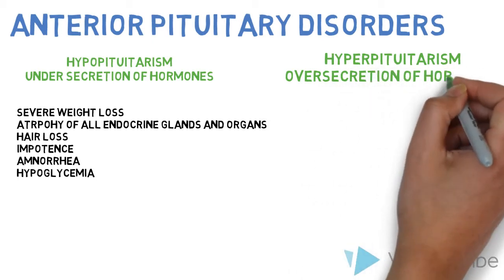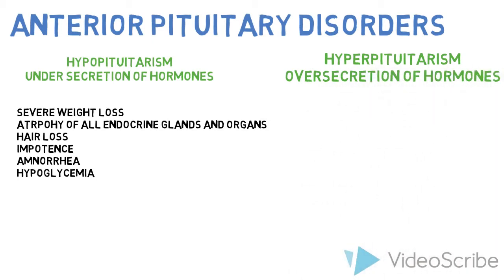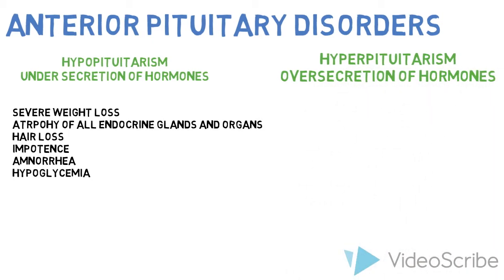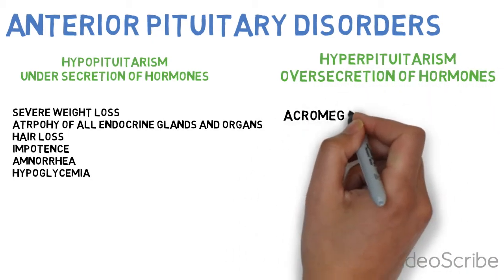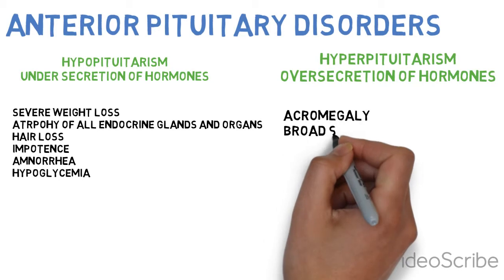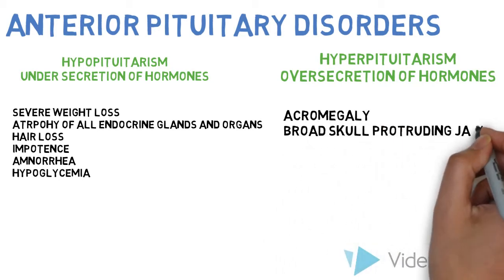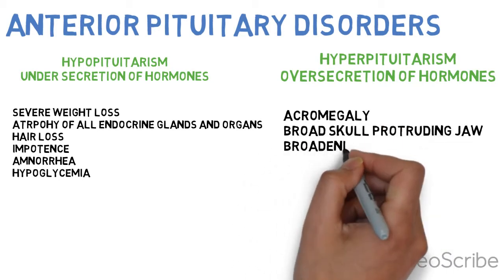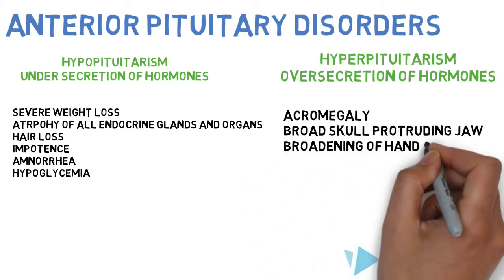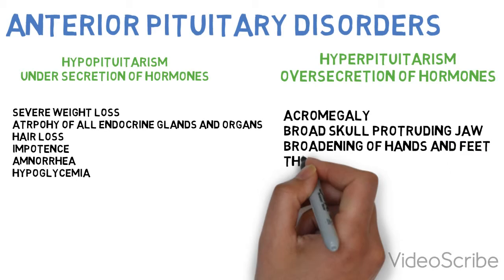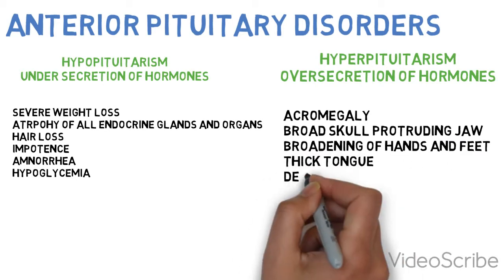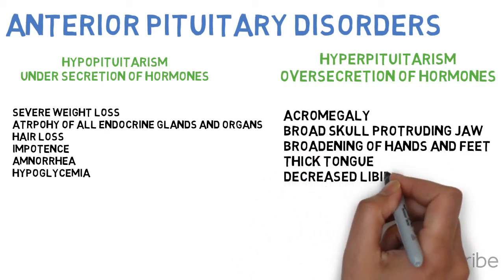In hyperpituitarism, that's overproduction of the hormones, we're going to see acromegaly in adults — broad skull, protruding jaw, broadening of hands and feet, thick tongue, decreased libido, amenorrhea, and impotence.